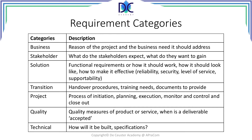Requirements related to the solution include functional requirements — reliability is very important, think about airplanes and the reliability of their components — as well as security (look at IT security), level of service, and all kinds of elements related to that specific solution we want to build. Requirements about transition cover what handover documents we have to create and what the training needs are — all these elements are typically completed at the end of the project and become very important during the closeout phase.